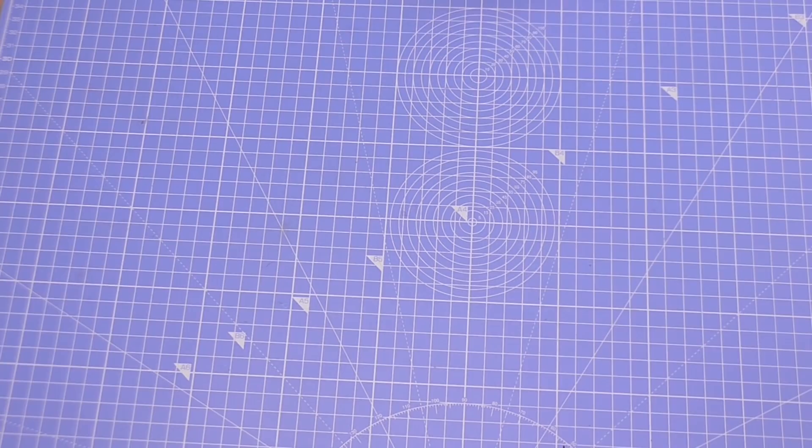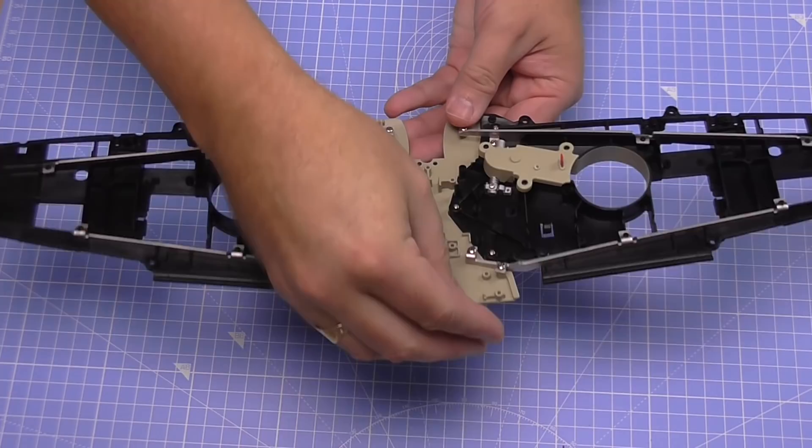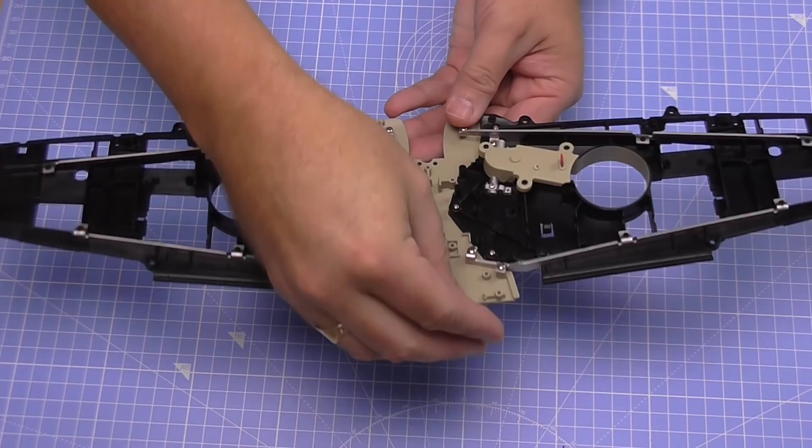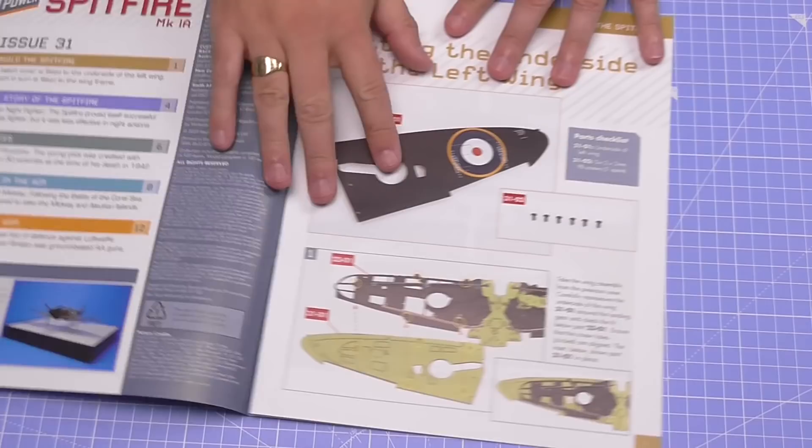What we're going to be doing is mounting this to the wing that we created last time, which is looking really good. Let's just show you the magazine that we've got here and I'll tell you what we've got coming in next issue - radiators and radiator housing for the underside of the right wing.